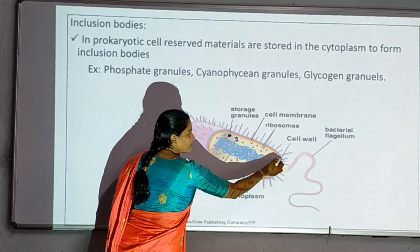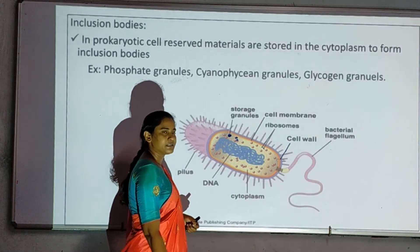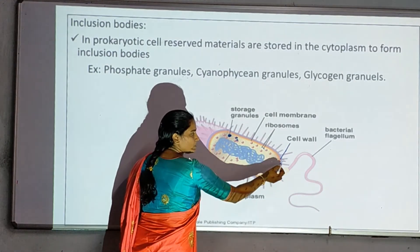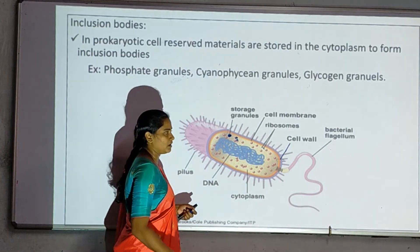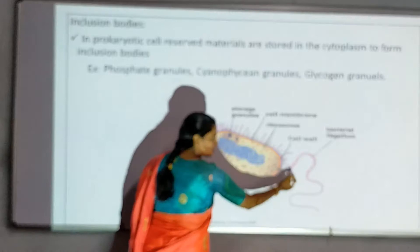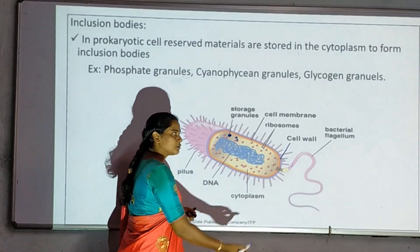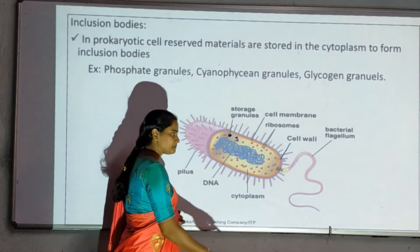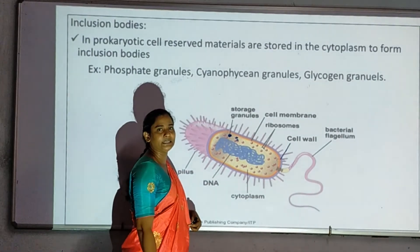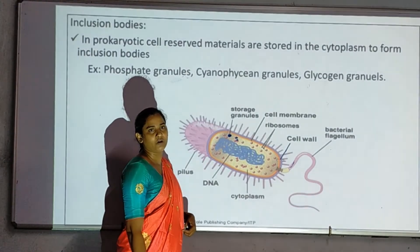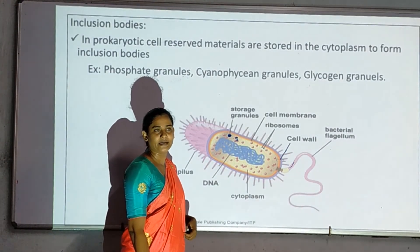Next one is the cell wall. The cell wall is outside the plasma membrane. The cell wall is a rigid structure that provides bacteria shape and protection. Next, the bacterial capsule is outside the cell wall. The flagella provides motility in bacterial movement.